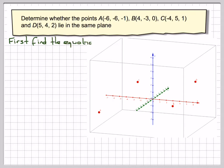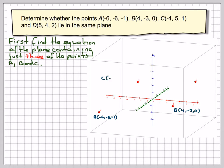First find the equation of the plane containing just three of the points. It doesn't matter which three points you take, but I'm going to take A, B, and C. Here I have the coordinates of each point: A is (-6, -6, -1), B is (4, -3, 0), and C is (-4, 5, 1). I'm going to deal with D later.